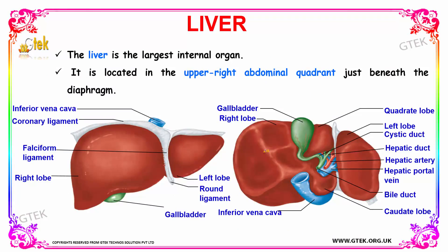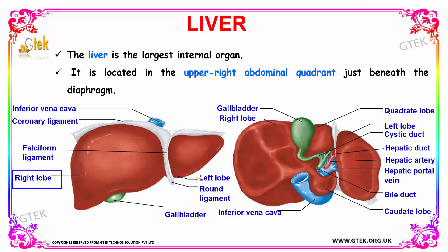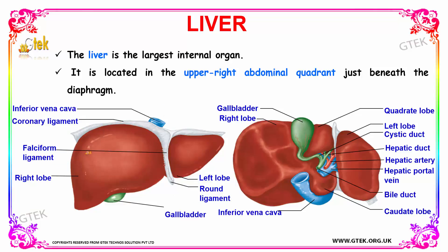Your liver is the largest internal organ. It is located in the upper right abdominal quadrant, just beneath the diaphragm. Your liver has a right lobe and a left lobe separated by the coronary ligament, the falciform ligament, and the round ligament. You can also find your inferior vena cava and your gallbladder. This is the anterior view of your liver.